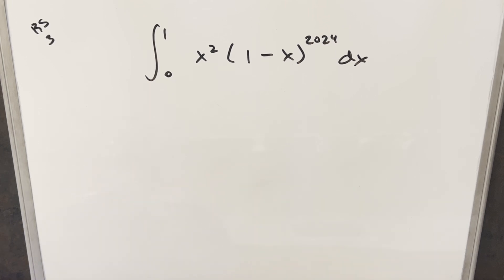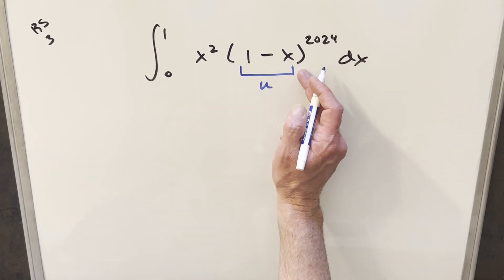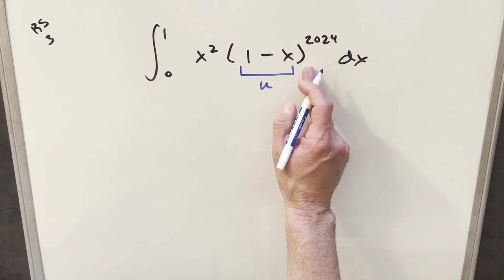Okay, I know exactly two different ways to do this. The first one would just be a u substitution right here. The reason this helps so much is because with one minus x to the 2024, multiplying it out is not really an option because that would take all day.